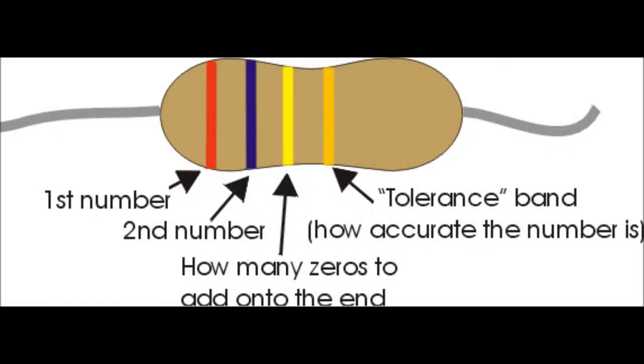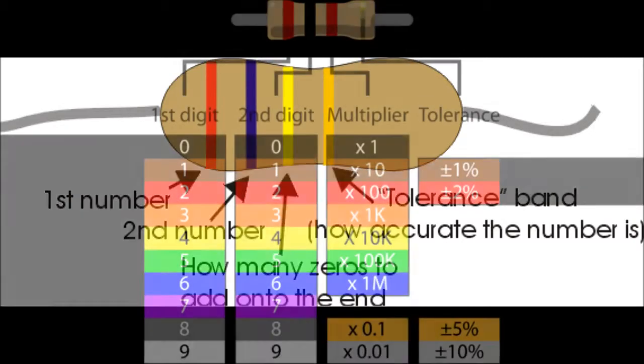The average resistor will have four color bands. If you look, you'll notice the band on one of the far ends should be metallic. This is the far end of the resistor, so we'll discuss this a bit later.